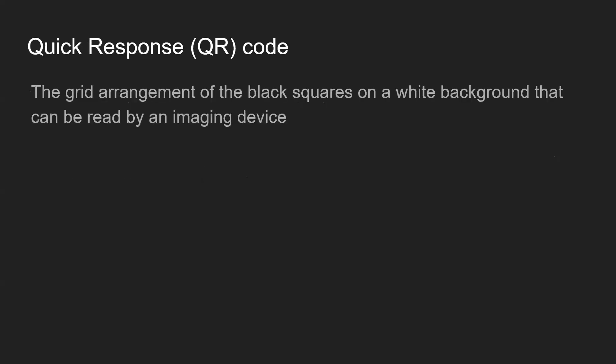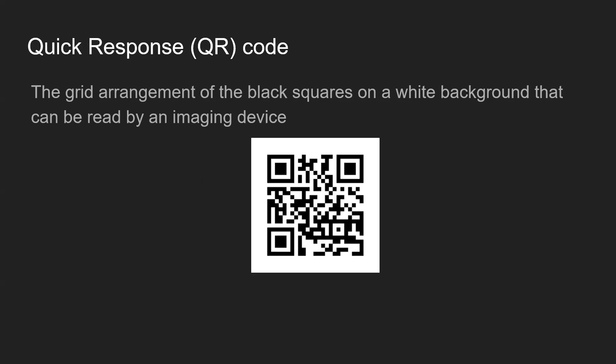The solution is to use the Quick Response code, which is usually called a QR code. It's a grid arrangement of black squares on a white background that can be read by an imaging device like smartphones, scanner devices, and so on. This is how the QR code looks like — it's called a two-dimensional barcode, and a lot of information can be encoded and represented in this QR code form.